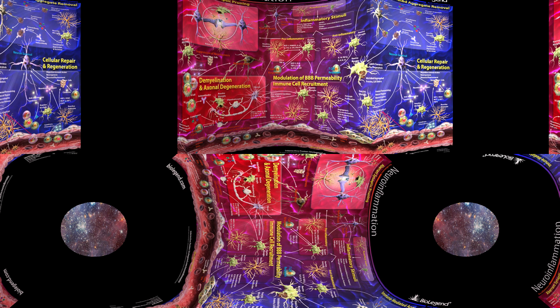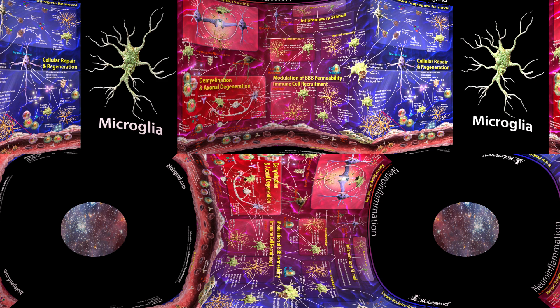Inflammatory stimuli can affect the resident immune cells of the brain — microglia and astrocytes. Microglia are the resident macrophages in the central nervous system (CNS) and account for 10–15% of all cells found in the brain.